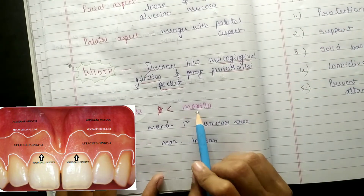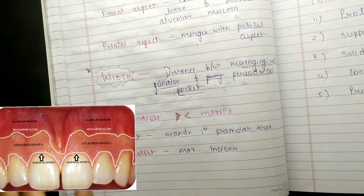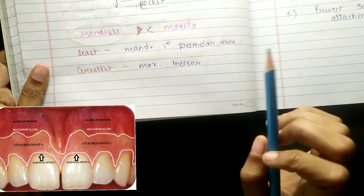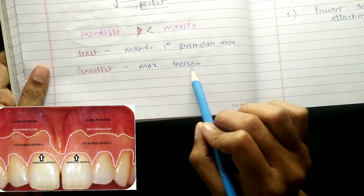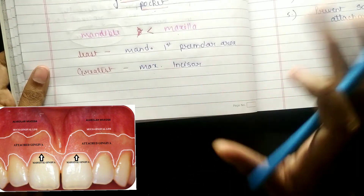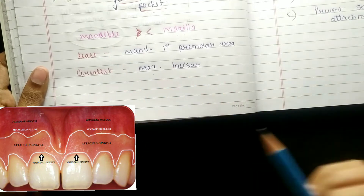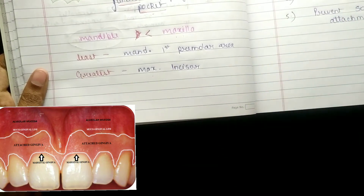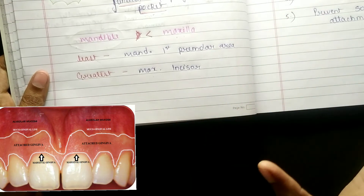If we look at the mandible, the maxilla has more attached gingiva width compared to the mandible. Where is the least width? The least width is at the mandibular first premolar area. And the maximum width is at the maxillary incisor. So do not confuse the least and greatest width — the maxilla is greater than the mandible, and the greatest width is at the maxillary incisors.